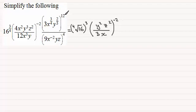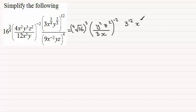Now let's deal with this fraction. For the top I'm going to take the power 12, so we have 3 to the power 12. Then x to the power three-quarters, all to the power 12 — multiply three-quarters by 12, giving x to the power 9. And y to the power two-thirds, all to the power 12 — that's two-thirds times 12 which is 8, giving y to the power 8. That's the top simplified.